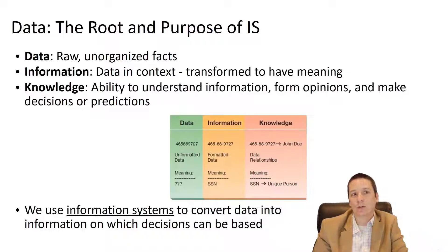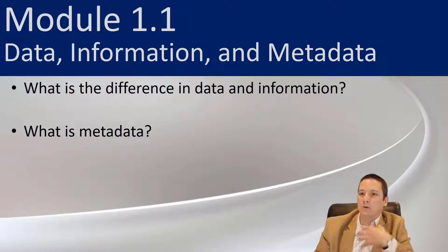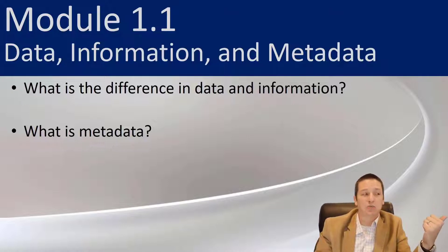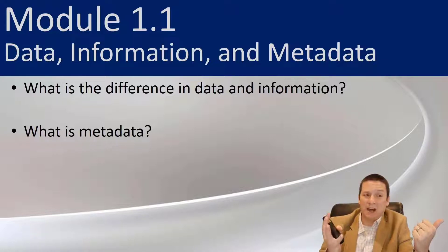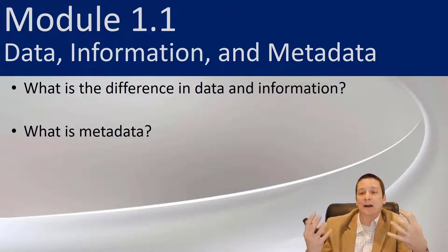So going back to these learning objectives that we talked about at the beginning of this module, data is raw, unorganized, and not of a lot of value in its current state, whereas information is data in context and really being able to kind of suss out that value from the data.